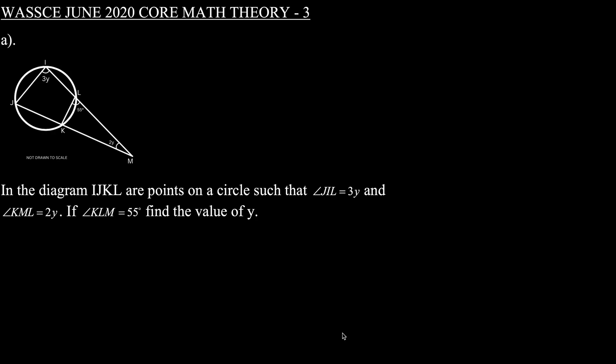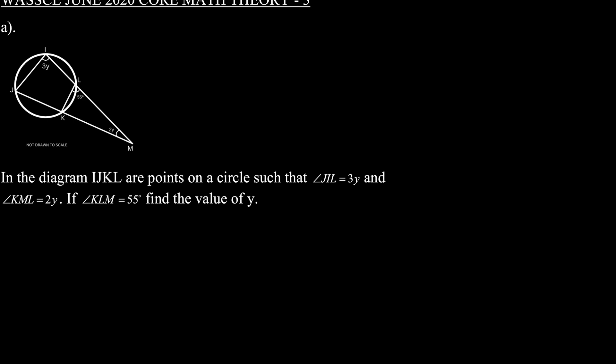Hi guys, welcome to Sabonzi Academy. In today's video we'll be solving question 3 of the 2020 WASSI June Commerce Theory questions. We begin with question 3a. In the diagram, IJKL are points on a circle such that angle JIL is equal to 3y and angle KML is equal to 2y. If angle KLM is equal to 55 degrees, find the value of y.